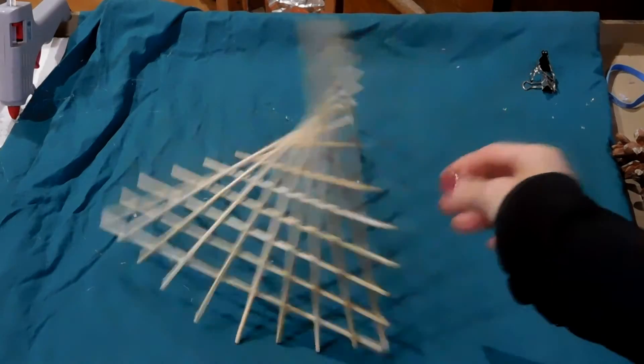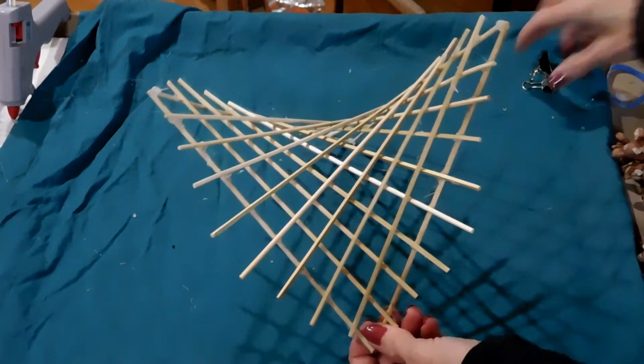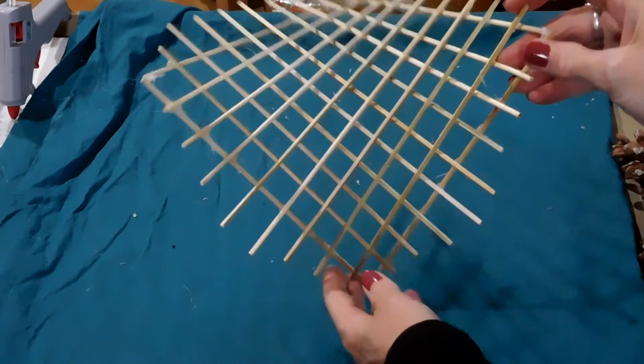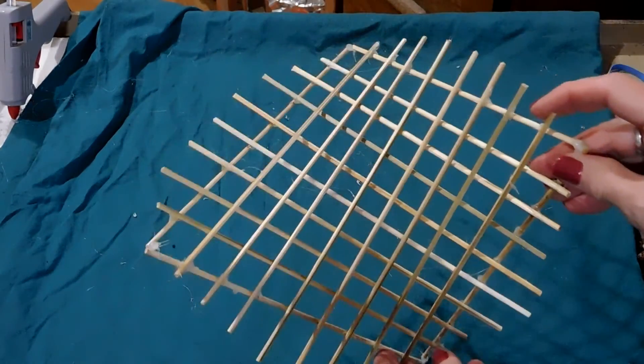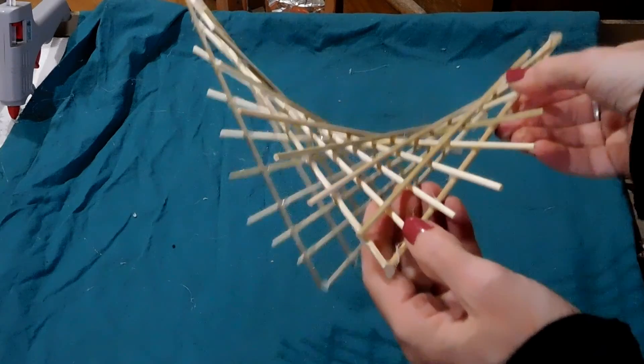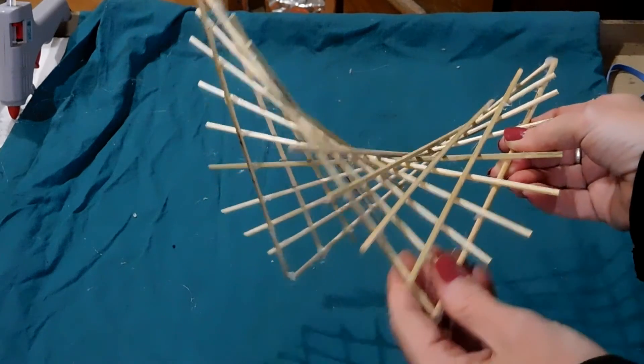So let's just take a look at it from a couple different directions, so we can get a feel for how it looks. There, from the top, from the side. So you can see, you can definitely see the saddle shape there.